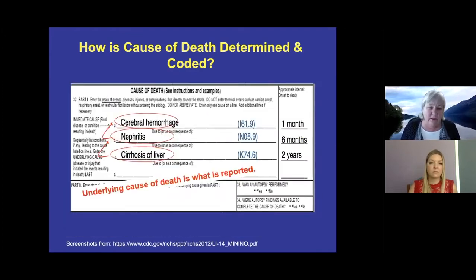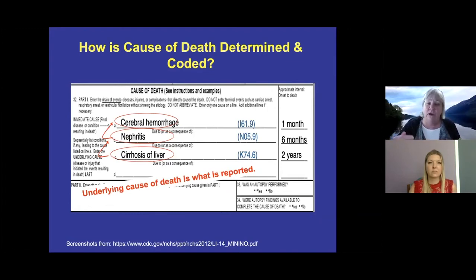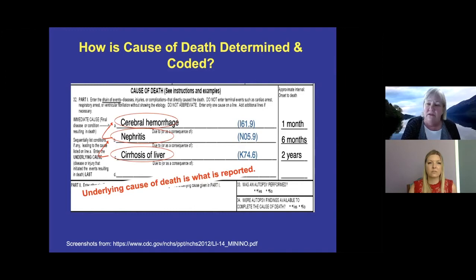Here's an example: cirrhosis of the liver is associated with nephritis, or kidney disease, because the disease process of cirrhosis can lead to nephritis. And nephritis can cause cerebral hemorrhage — another name for stroke. So it was the stroke that killed someone, but that stroke was caused by the nephritis, which was caused by the cirrhosis. Since cirrhosis started this whole cascade event, it will be considered the underlying cause of death — and that's what is reported when you see cause-of-death data.